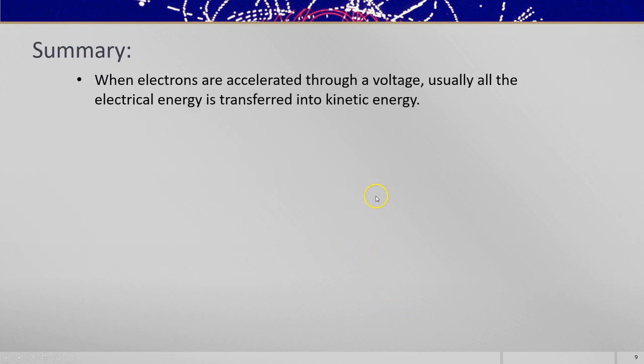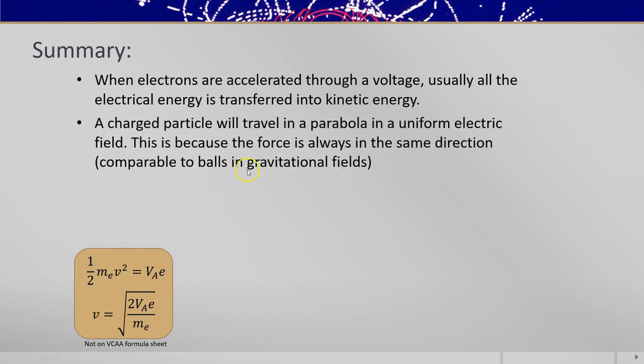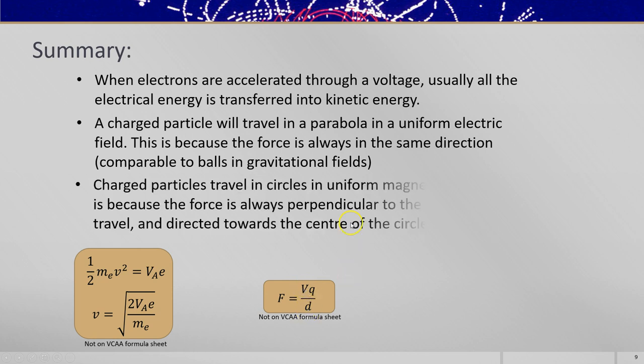So in summary, when electrons are accelerated through a voltage, the electrical energy is transferred into kinetic energy, and you might want this equation to work out their velocity. A charged particle travels in a parabola in a uniform electric field because the force is always in the same direction. So it's comparable to a ball in a gravity field, and this formula will give you the force on the moving charged particle between two plates. And charged particles travel in circles in uniform magnetic fields because the force is always perpendicular to the direction of travel by the right-hand slap rule or Fleming's left-hand rule. And this equation will give you the radius of curvature.